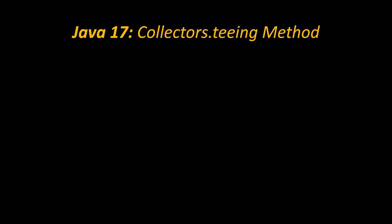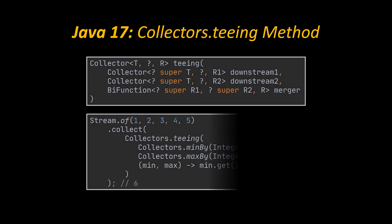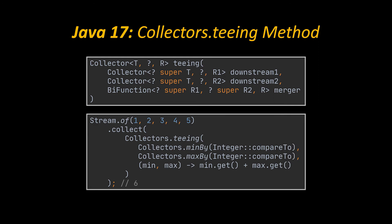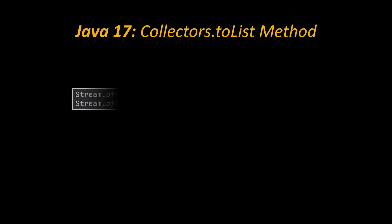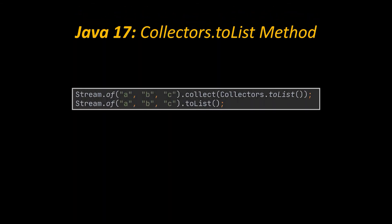Next, we have a new functionality introduced to the Collectors class in the Streams API: the teeing method. This one accepts two downstream collectors. Each element in the stream is processed by both downstreams, then both their results are passed to a merge function and transformed into the final result. In the example shown, we used the teeing method to add the minimum number in our integer list to the maximum. Another method added to the Stream API is toList, so instead of using collect(Collectors.toList()), we can now directly call toList and be done with it.